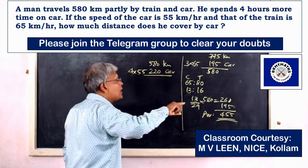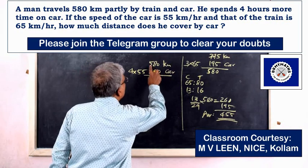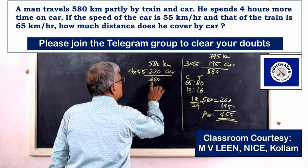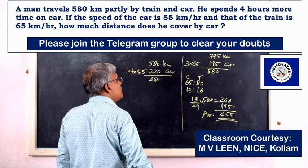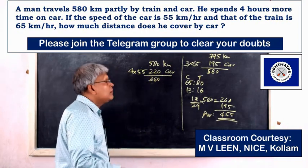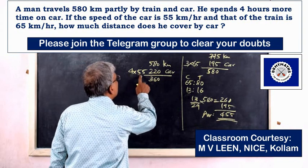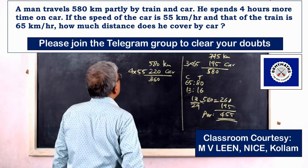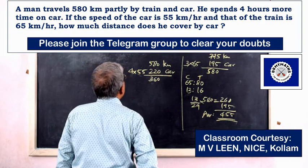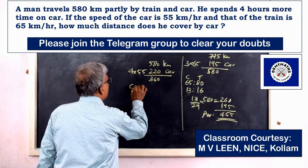At equal time, the car will cover 360 km. The speed of the car is 55 km/h and the train is 65 km/h. Car to train speed ratio is 55 to 65.